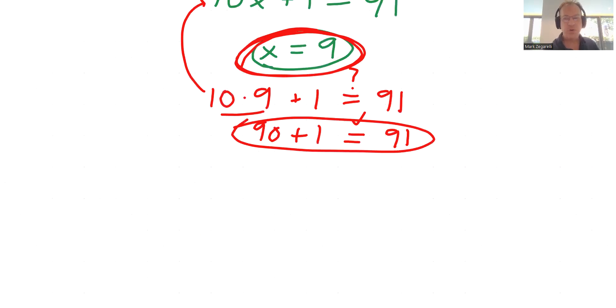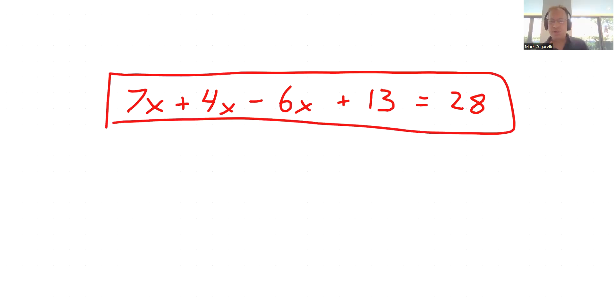And I'm going to leave this question for you for the next video. So 7x plus 4x minus 6x plus 13 equals 28. This is where it gets complicated. And so I'm going to just leave this hanging for the next video. And I think you may well be able to do this because I already gave you the skill that I'm going to discuss in lesson number 4.